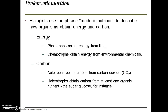Biologists use the phrase 'mode of nutrition' to describe how organisms obtain energy and carbon. Energy can be obtained two ways: phototrophs obtain energy from light and are most common, while chemotrophs obtain energy from environmental chemicals. Those hydrothermal vents are examples of chemotrophic ecosystems. Carbon can be obtained from carbon dioxide, or heterotrophs obtain carbon from organic nutrients such as glucose.